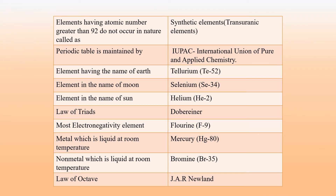Elements having an atomic number greater than 92 do not occur in nature and are known as synthetic elements. They are also known as transuranic elements or man-made elements. The Periodic Table is maintained and updated by IUPAC, the International Union of Pure and Applied Chemistry.